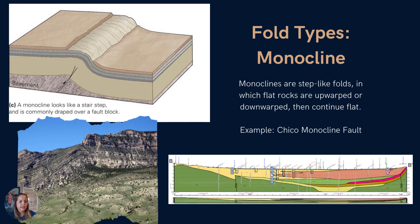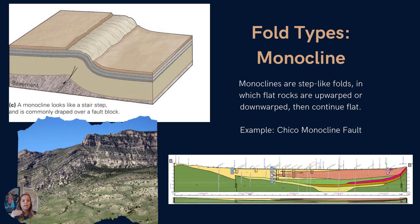Moving on to monoclines — these are usually hard to see unless you're looking at a cross section, because we don't see beds dipping up or out like you would with a syncline or anticline. They are step-like folds that look like they have offset a little step of material — the flat rocks are upwarped or downwarped and then continue flat, kind of like a stair step. It's a very light fold, but still the result of compression. An example would be the Chico monocline fault, shown there in cross section where you can see the little step in all those colored layers.